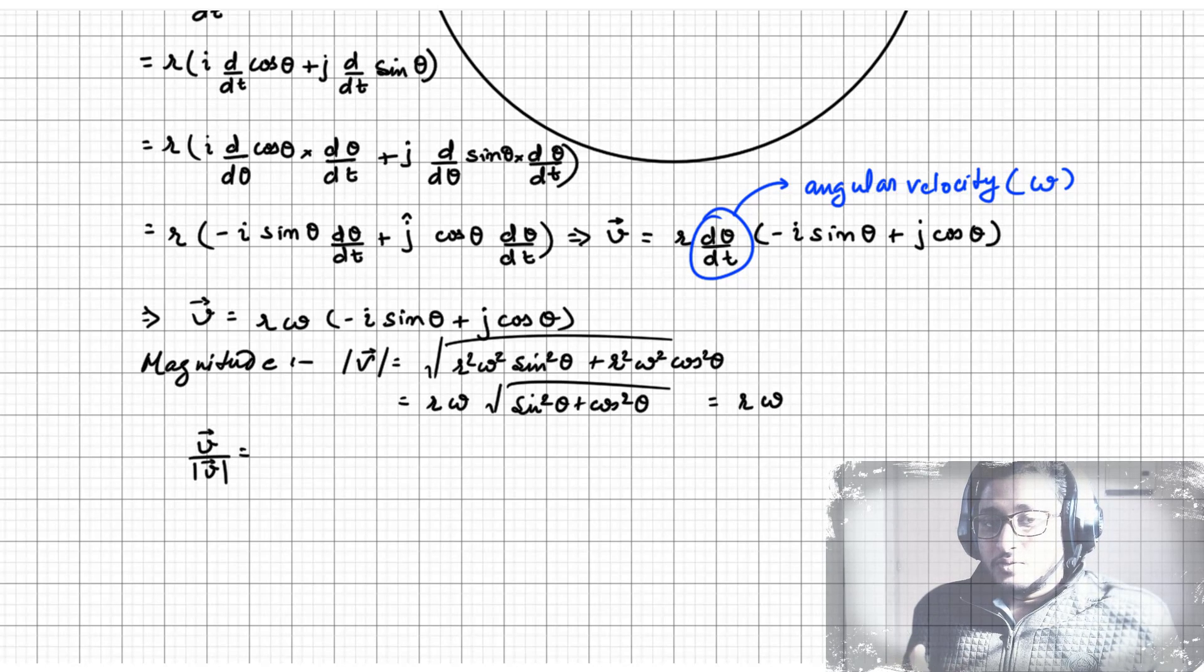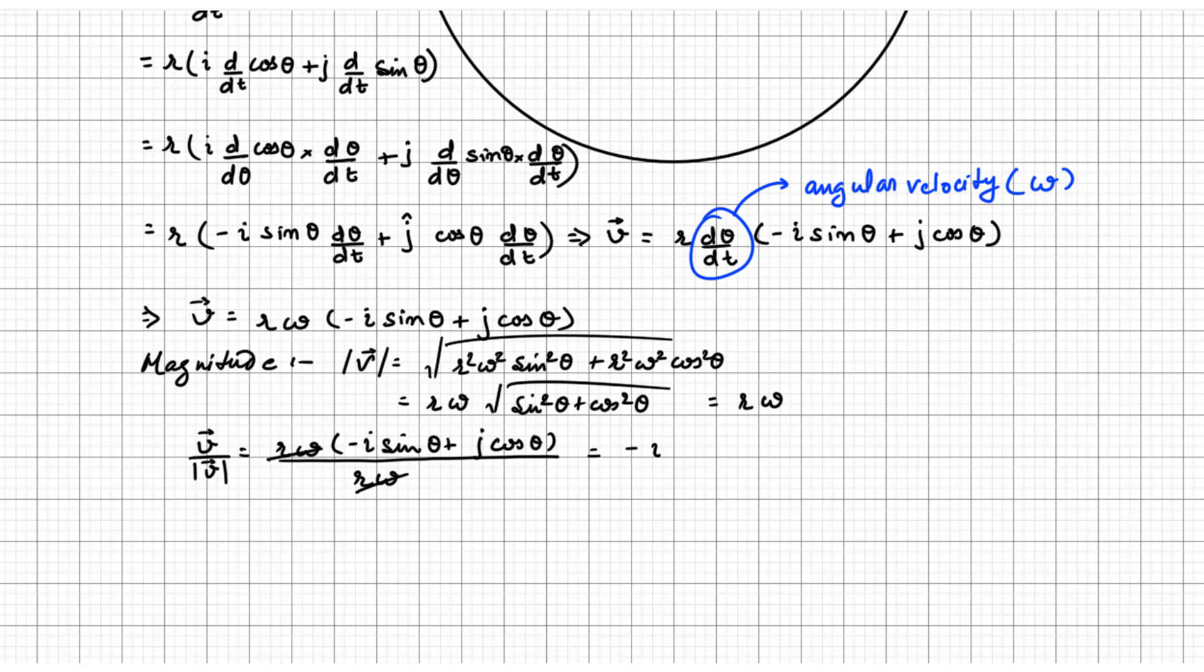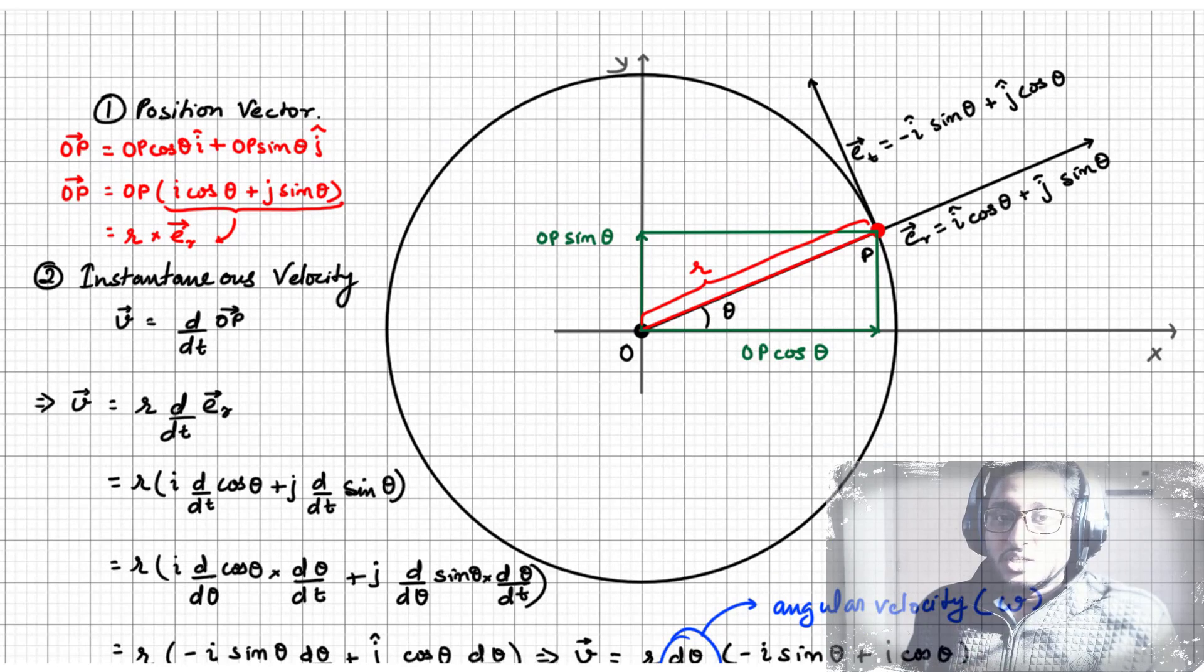And if we divide the vector quantity by its magnitude, it will give us the unit vector of minus i sin theta plus j cos theta, which is the same as the tangential unit vector. This indicates that the direction of instantaneous velocity will be along the tangent.